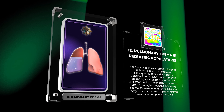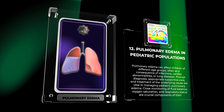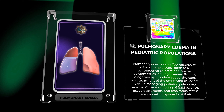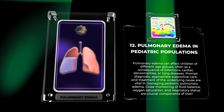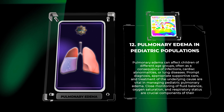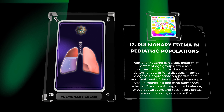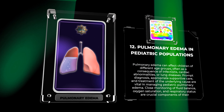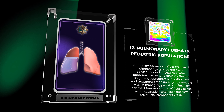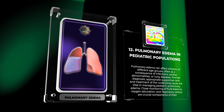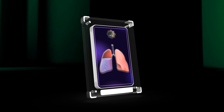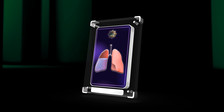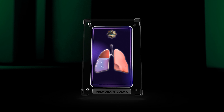Pulmonary edema can affect children of different age groups, often as a consequence of infections, cardiac abnormalities, or lung diseases. Prompt diagnosis, appropriate supportive care, and treatment of the underlying cause are vital in managing pediatric pulmonary edema. Close monitoring of fluid balance, oxygen saturation, and respiratory status are crucial components of their management.